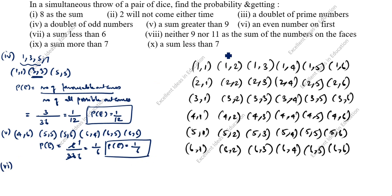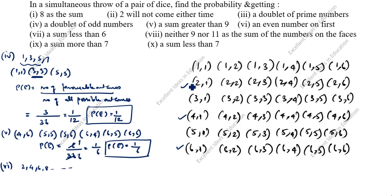Sixth question: even number on first die. The even numbers are 2, 4, and 6. When the first die shows 2, 4, or 6, the second die can show any of 6 values, giving 6 + 6 + 6 = 18 favorable outcomes. P(E) = 18/36 = 1/2.